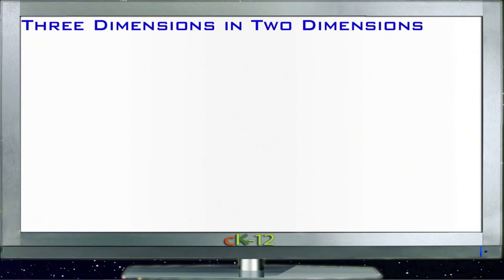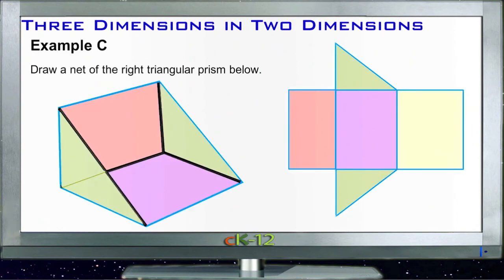Example C says draw a net of the triangular prism below. I went ahead and sketched in our net here. The prism itself looks like this, and I colored the sides different colors so again we can keep them straight.